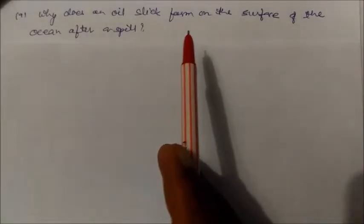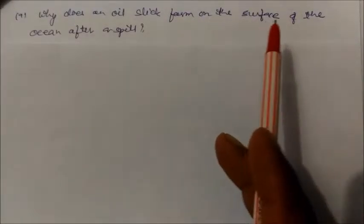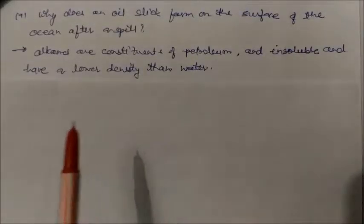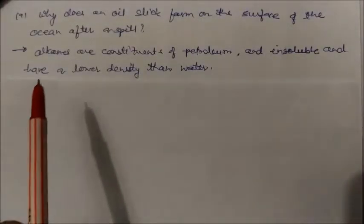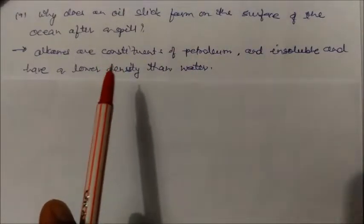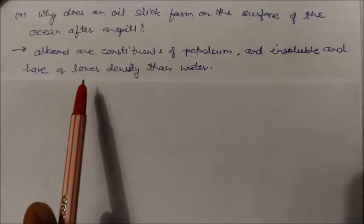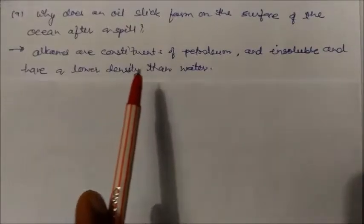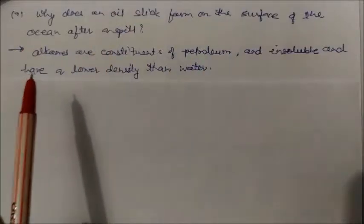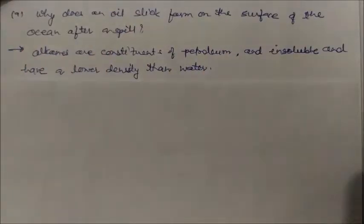Why does an oil slick form on the surface of the ocean after a spill? The answer is straightforward: alkanes are constituents of petroleum, they are insoluble in water, and they have a lower density than water. That is why oil slicks form on the surface of the ocean after a spill.